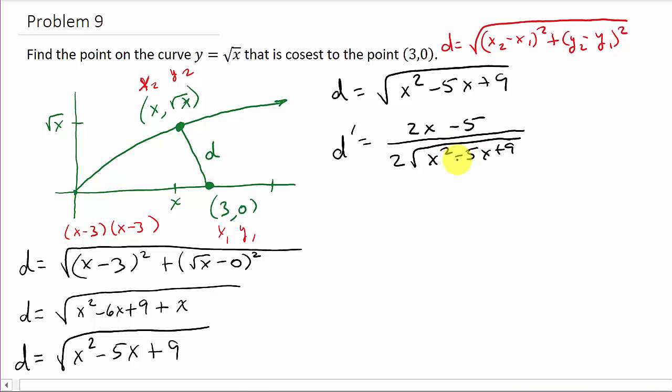Now we set the derivative equal to 0 and solve for x. If we have a fraction, the only time that this is equal to 0 is when the numerator is equal to 0. So we set the numerator equal to 0, and we get x equals 5 halves.